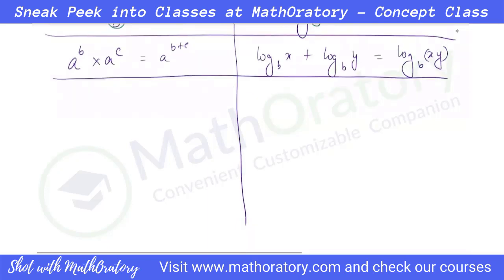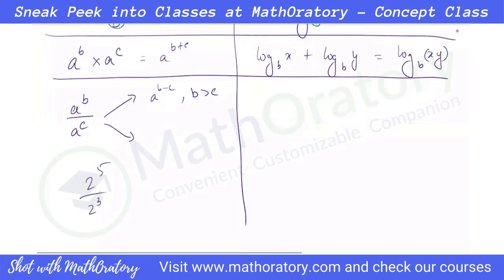Similarly, if I have a to the power b divided by a to the power c, suppose b is greater than c — you have more a's multiplied in the numerator than in the denominator. After cancellation, you will be left with b minus c a's in the numerator. For example, five twos in the numerator and three twos in the denominator gives two twos left — that is five minus three.